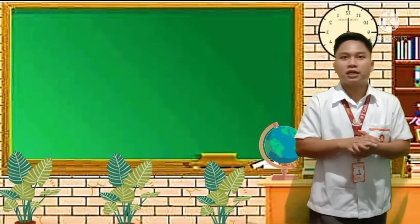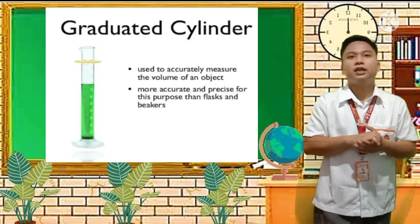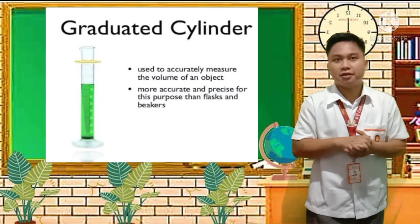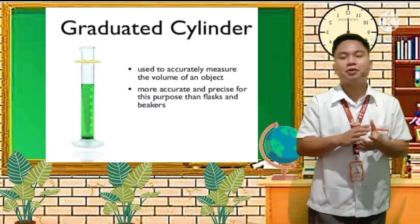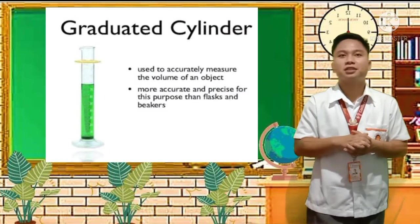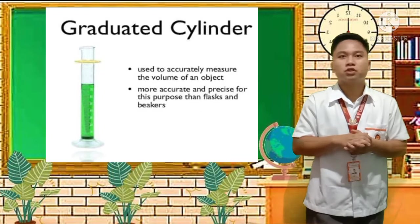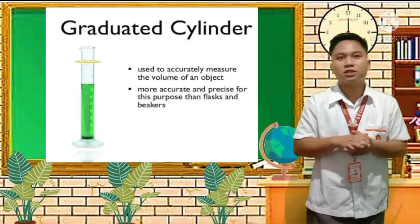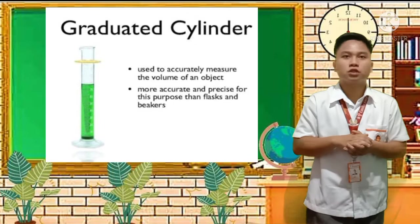For the next slide, we have the graduated cylinder. This is a very familiar apparatus used in experimentations. It is used to accurately measure the volume of an object or substance.